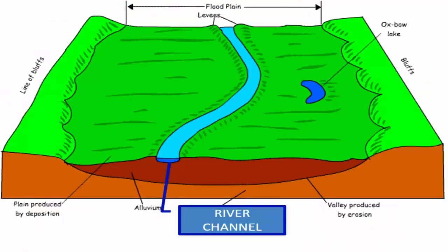During floods, the river flows through the entire river valley. As it does, it deposits suspended load in the river valley. Such deposits constitute the river's flood plain. During low discharge, the river tends to flow through a limited river channel, and the remaining part of the river valley remains dry.